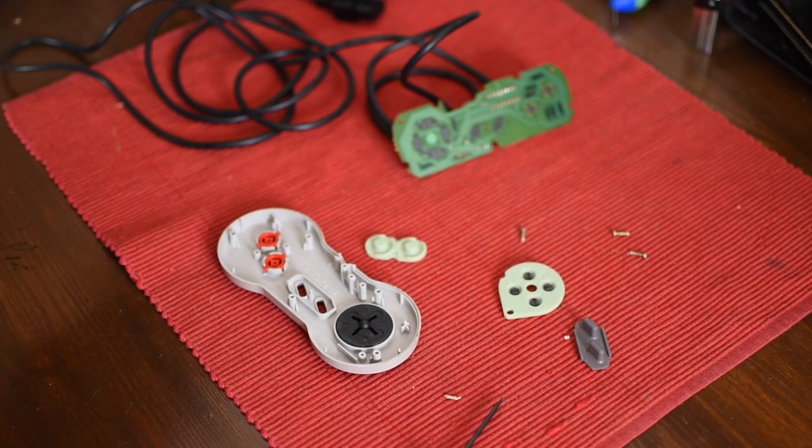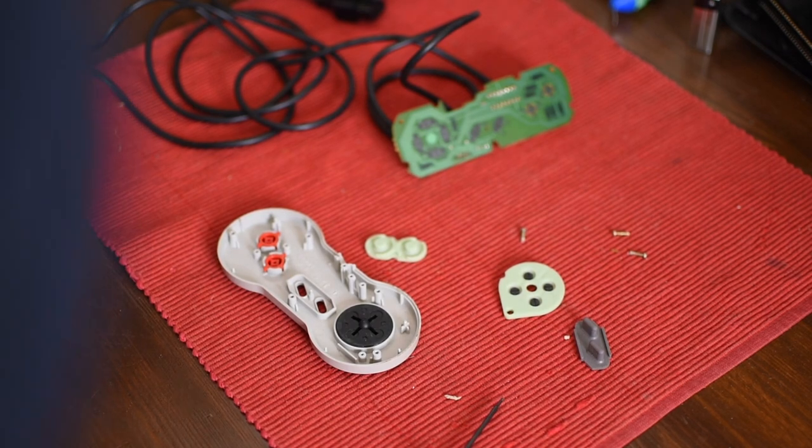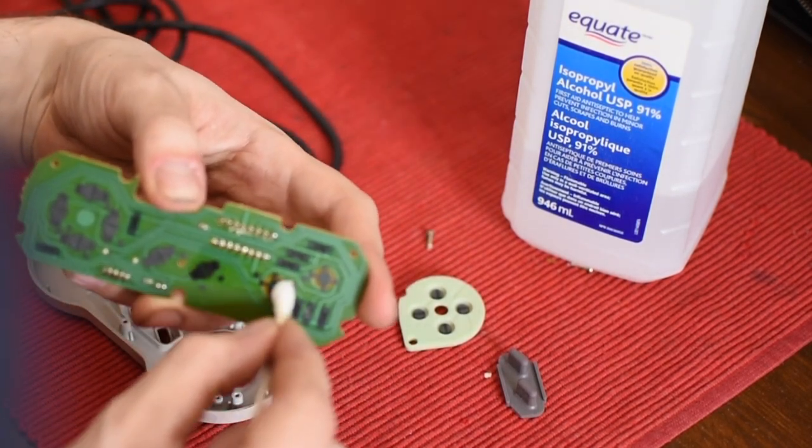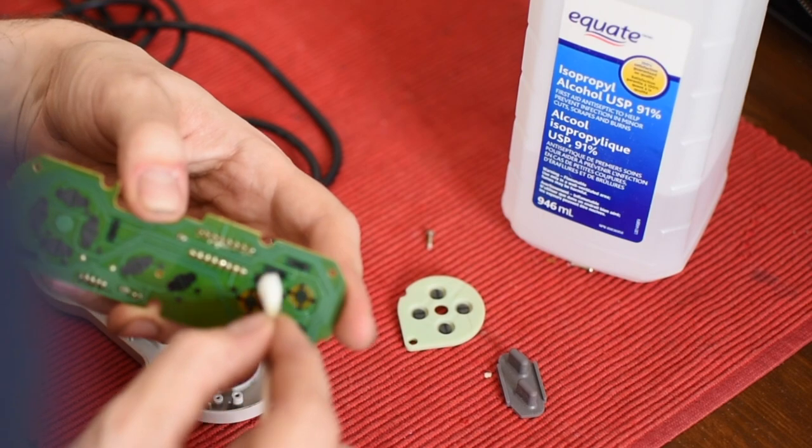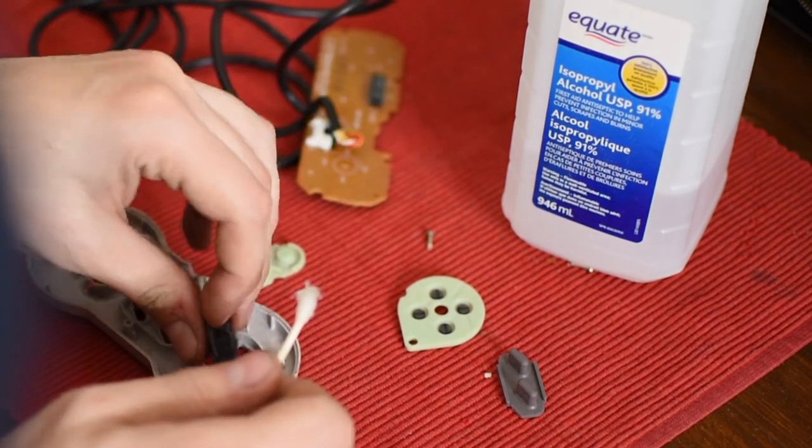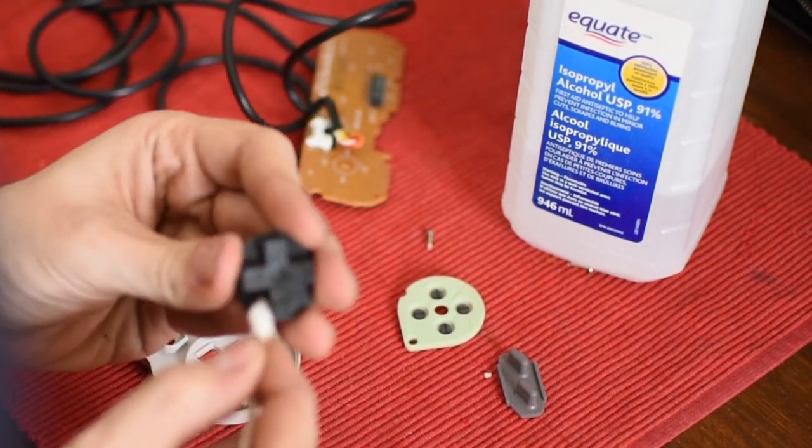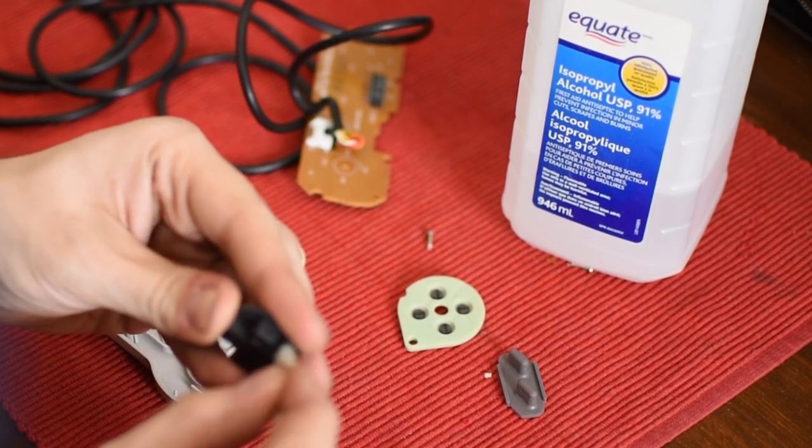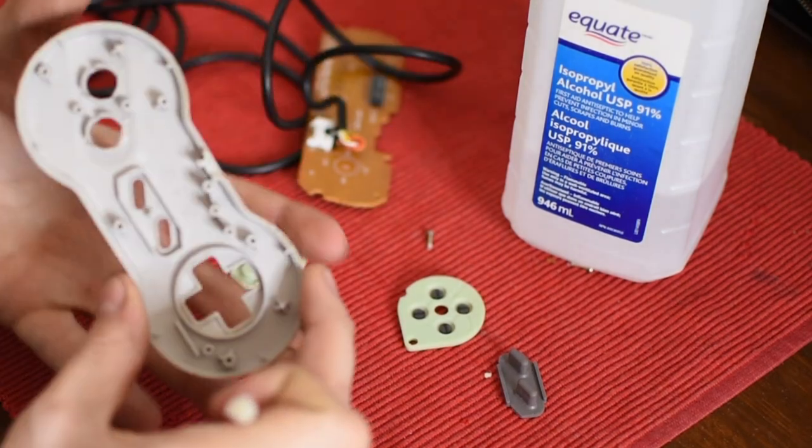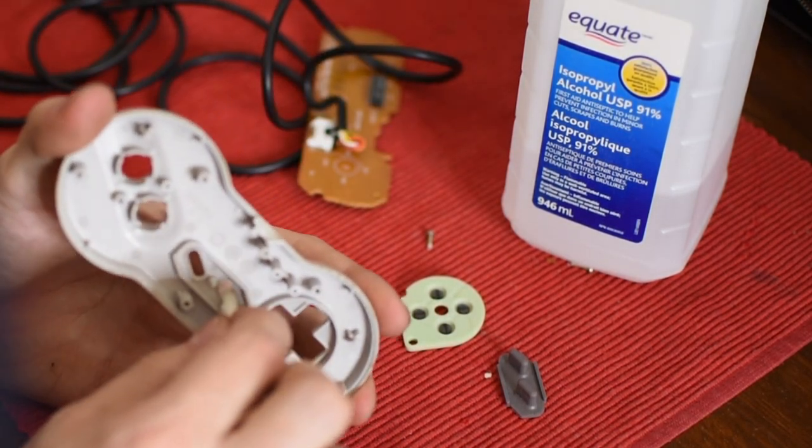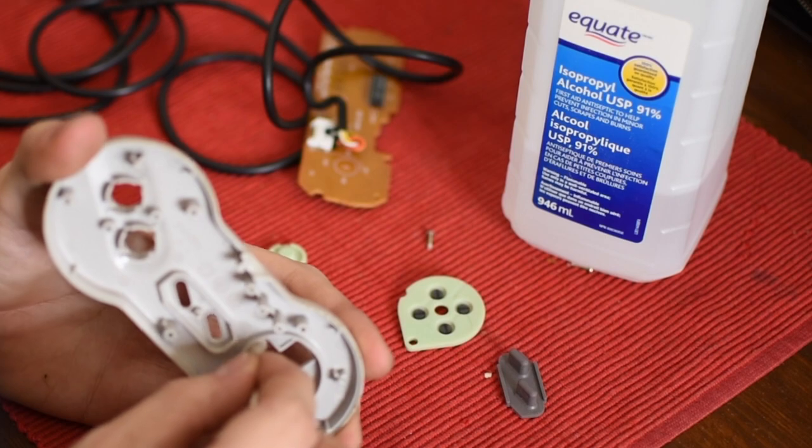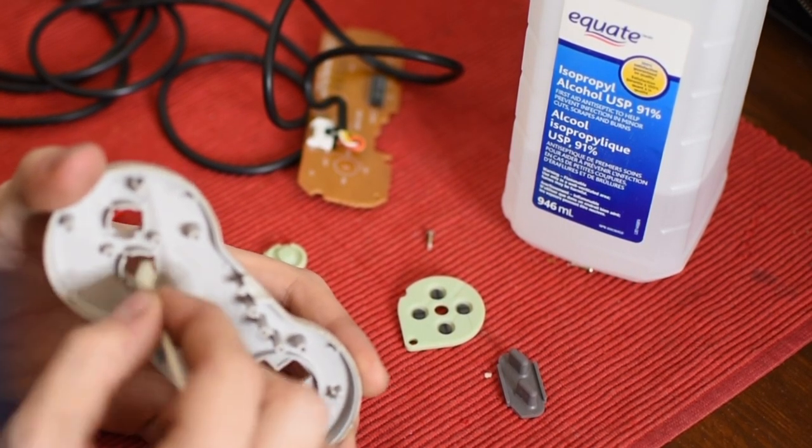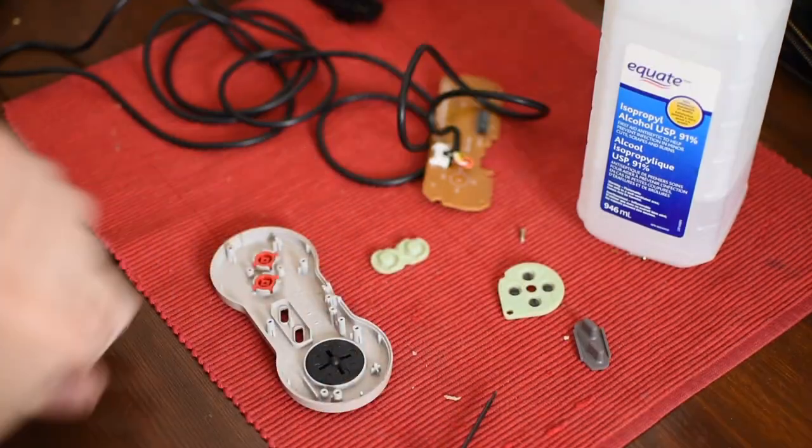So while you have it open, it's actually a very good opportunity to clean it out as well. I always recommend using isopropyl alcohol. It's a good multi-purpose cleaner. It won't do any damage and it can get rid of a lot of gunk without too much effort. Also clean out the buttons themselves, just in case there's any dirt that might be causing problems. And I mean, while you have it open, you might as well give it all a full clean. And not just the buttons, but also this housing where the buttons go in, it's very important to clean this out because that's where a lot of the gunk is actually going to get stored and build up over time.